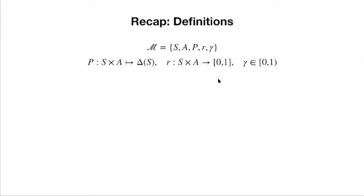Before we jump into today's material, let's do a quick recap. Today we're going to use things covered from the first week to derive algorithms. Starting this week, we're going to talk about algorithms rather than definitions and properties. We talked about infinite horizon discounted MDP — the definition has five terms: state space, action space, transition probability distribution, reward function, and discount factor.